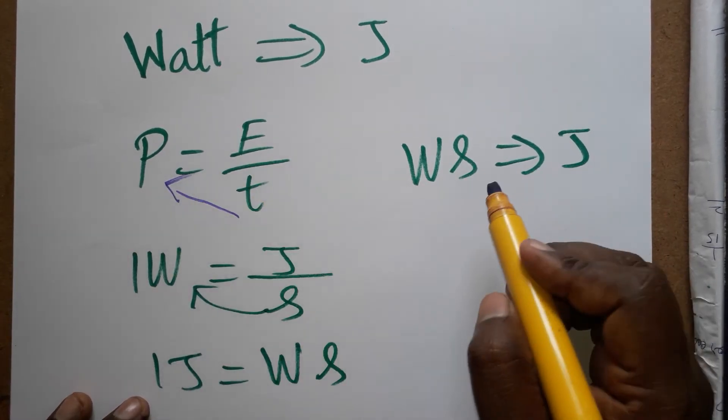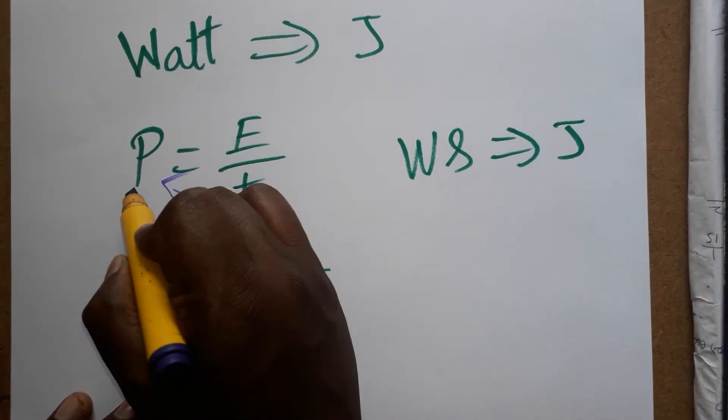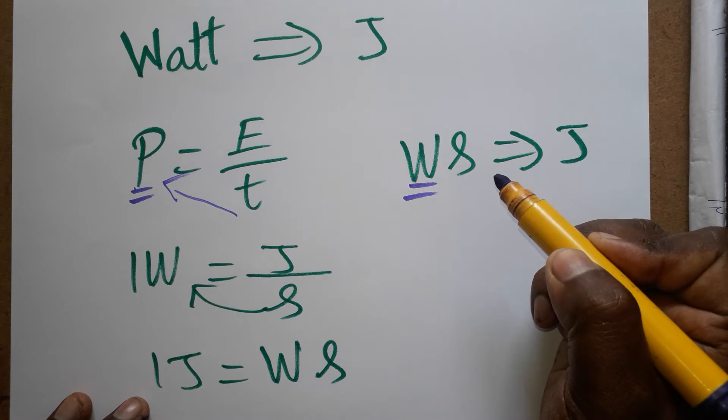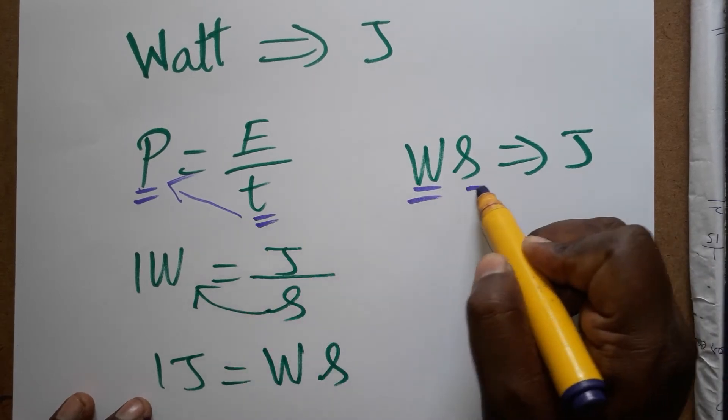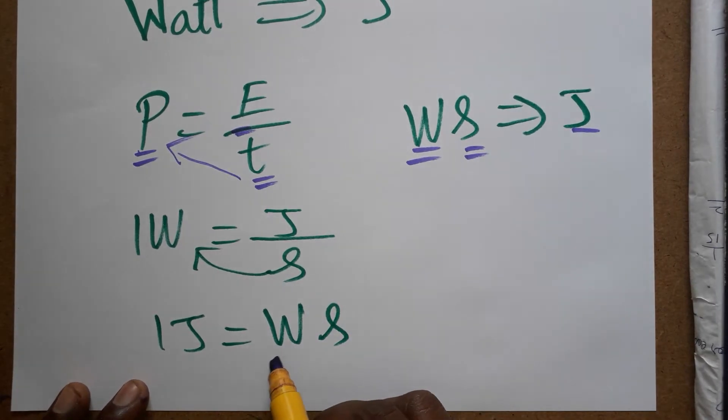So time I am taking to this side, so power into time is equal to energy. The unit of power we can take as watt, time unit is second, energy unit is joule. So one joule is equal to watt into second, so watt into second is going to represent as joules.